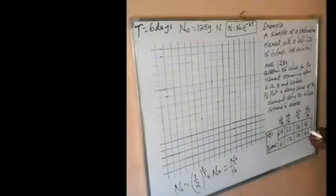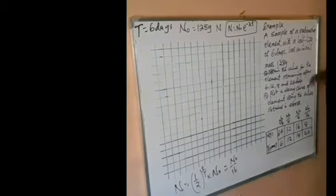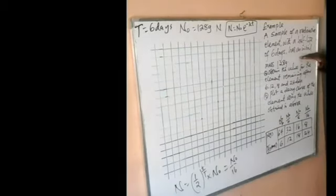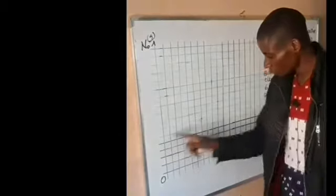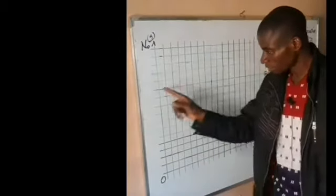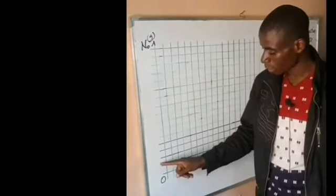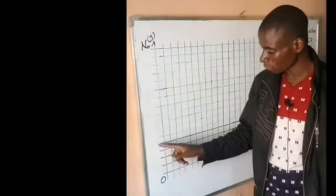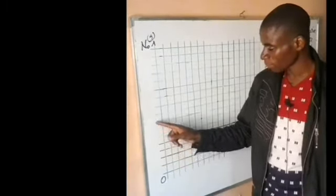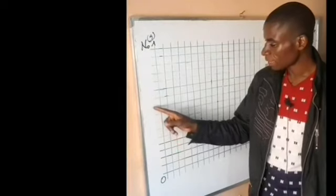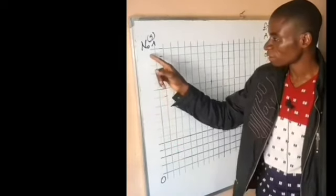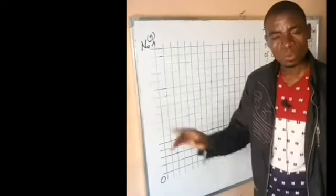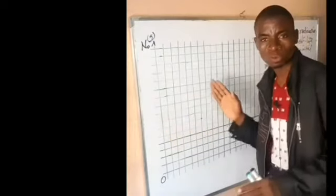Now the next phase is just the solution to Part A. We look at our graph paper: we count the rows and we have 16 rows available.